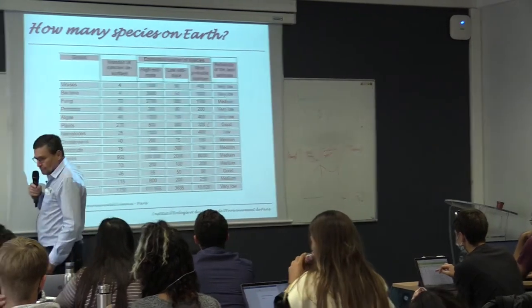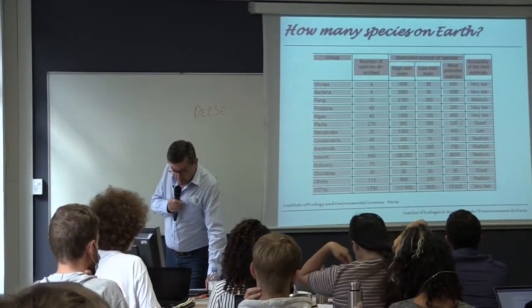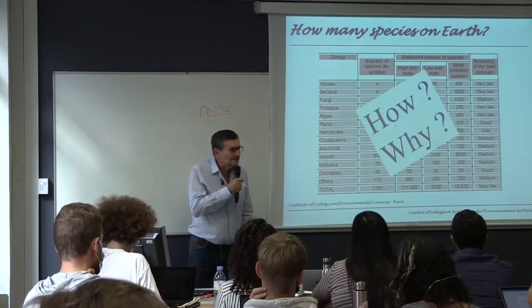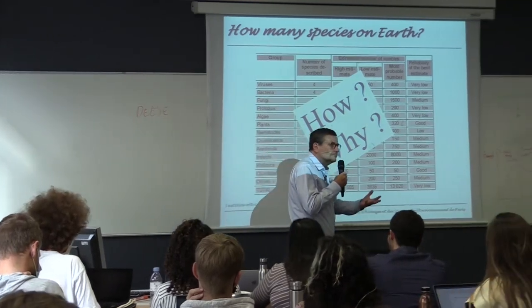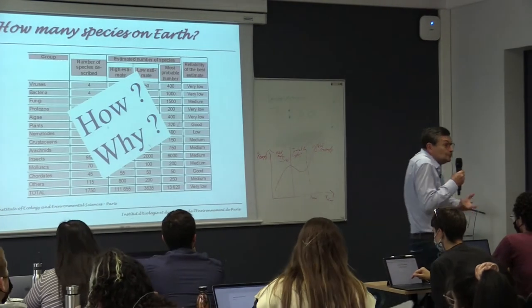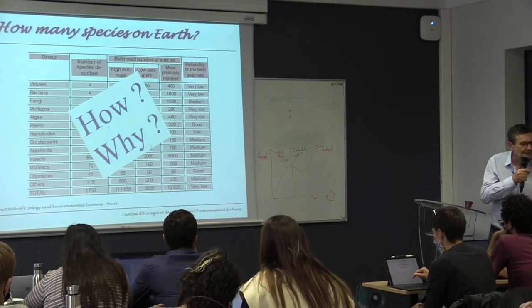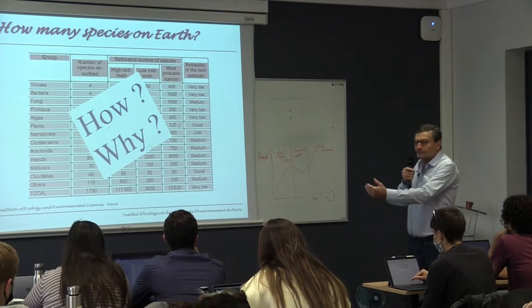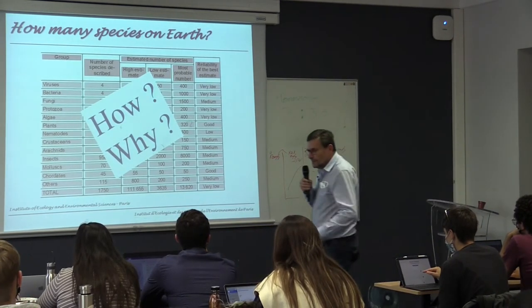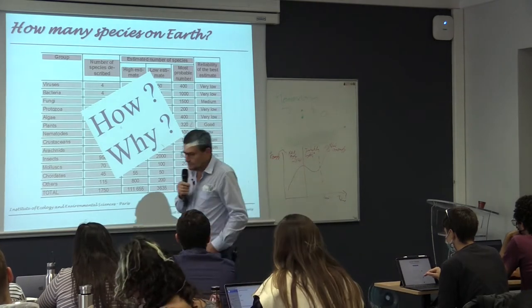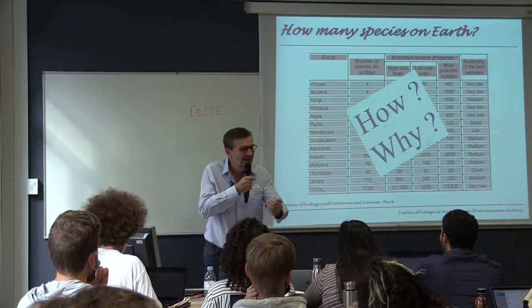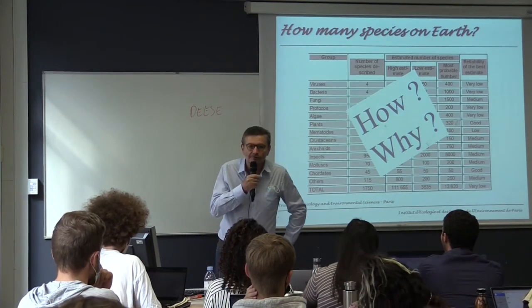Now the question is: how do we arrive at this number of two million species? Why two million? Why not only one species on Earth? How can we arrive at this number of species in terms of evolution? It is not just a technical problem of counting species — it is also a question of the process leading to this number of species.